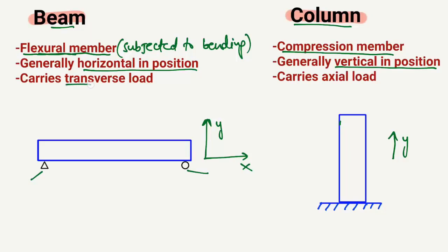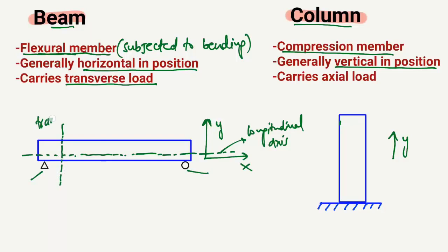The third difference is that the beam carries the transverse load. By transverse load, it means that if we consider the longitudinal axis of the beam, the axes perpendicular to the longitudinal axis are known as the transverse axes. The load is always acting transversely on the beam — perpendicular to the longitudinal axis — which is along the transverse direction. That is why the beam always carries the transverse load.